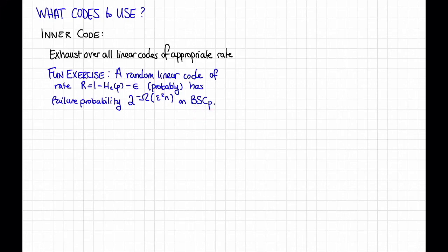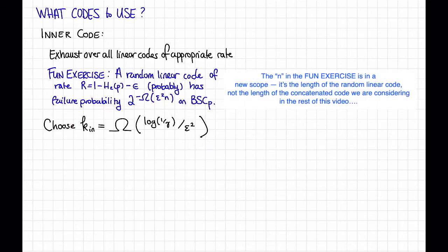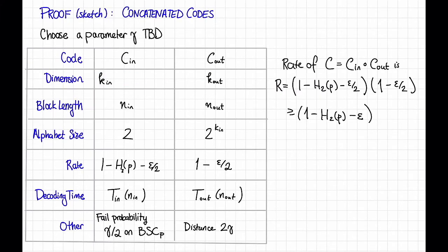Assuming this exercise is true, it suggests how we should choose k_in. We should choose k_in to be big Omega of log(1/gamma) divided by epsilon squared. The reason is that we want the failure probability 2 to the minus big Omega of epsilon squared n to equal gamma over 2 — that's what we requested from the inner code — so we choose k_in like this to make that work out.